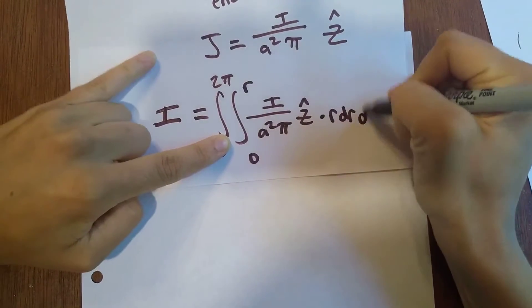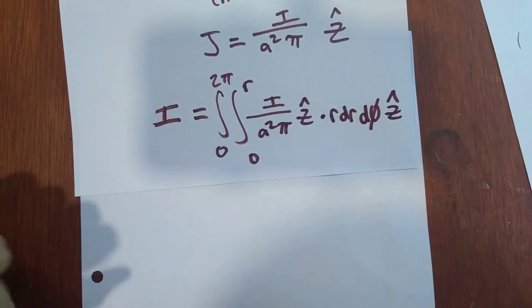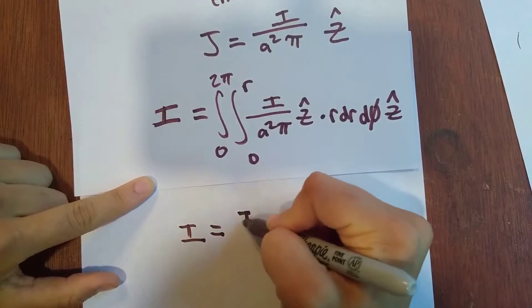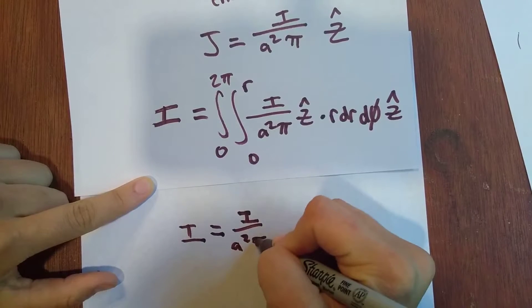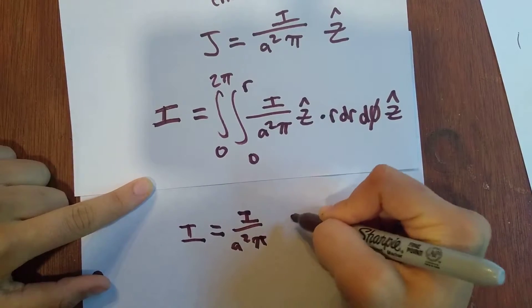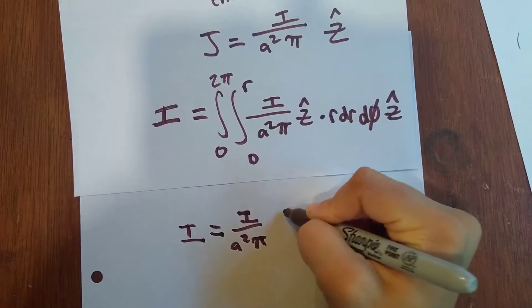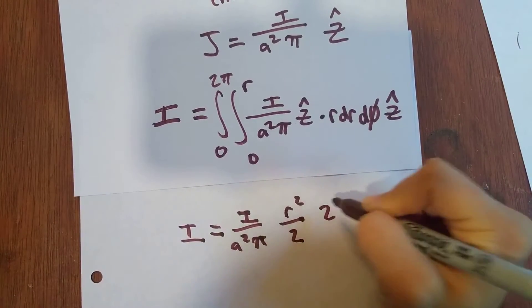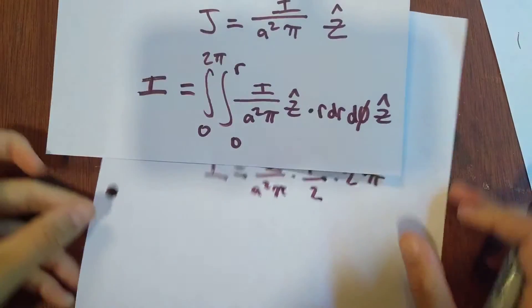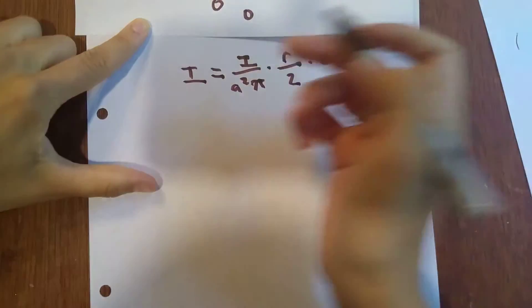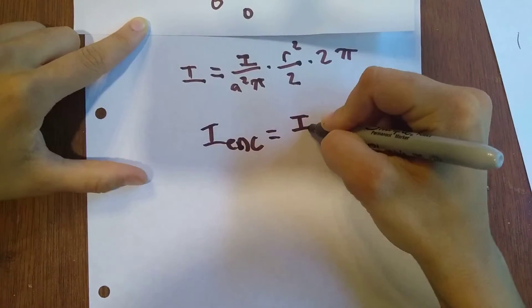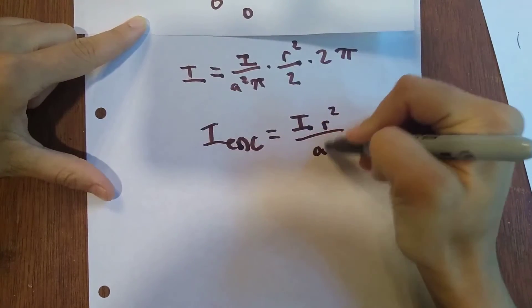This is our new J dotted with our same DS, which is R DR D phi Z hat. Alright, that's going to simplify. So our I enclosed as a function of R is I R squared over A squared.